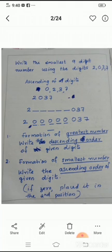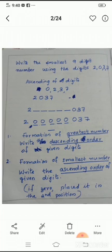Which is the smallest digit? Yes, zero is the smallest digit. So repeat zero five times and get the number 200000037. Understood?